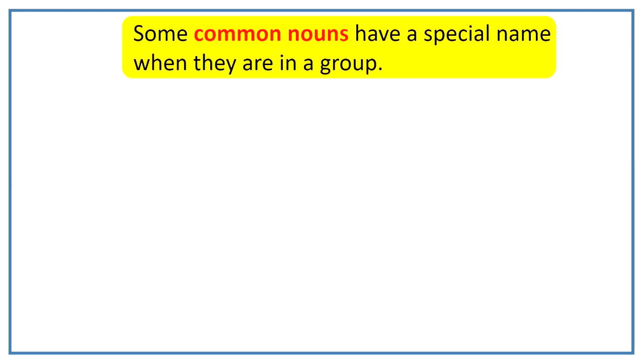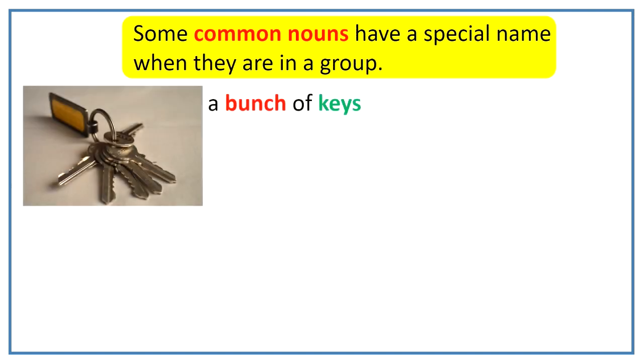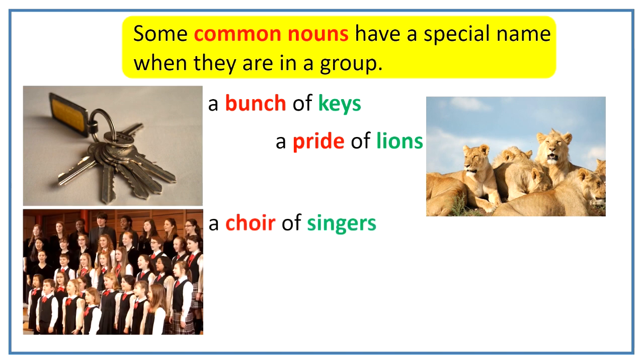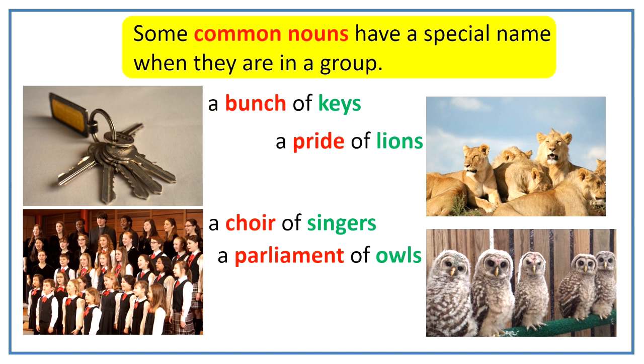Some common nouns have a special name when they are in a group. For example, a bunch of keys, a pride of lions, a choir of singers and a parliament of owls. Here you can see that bunch is a collective noun for a group of keys. In the same manner, pride, choir and parliament are collective nouns for a group of lions, singers and owls respectively.